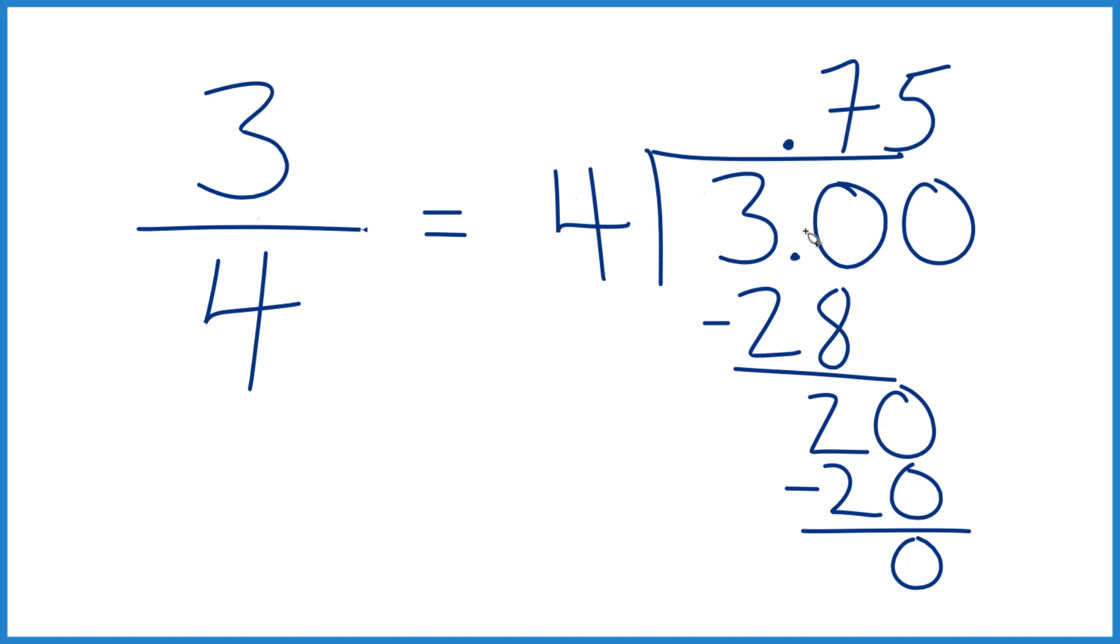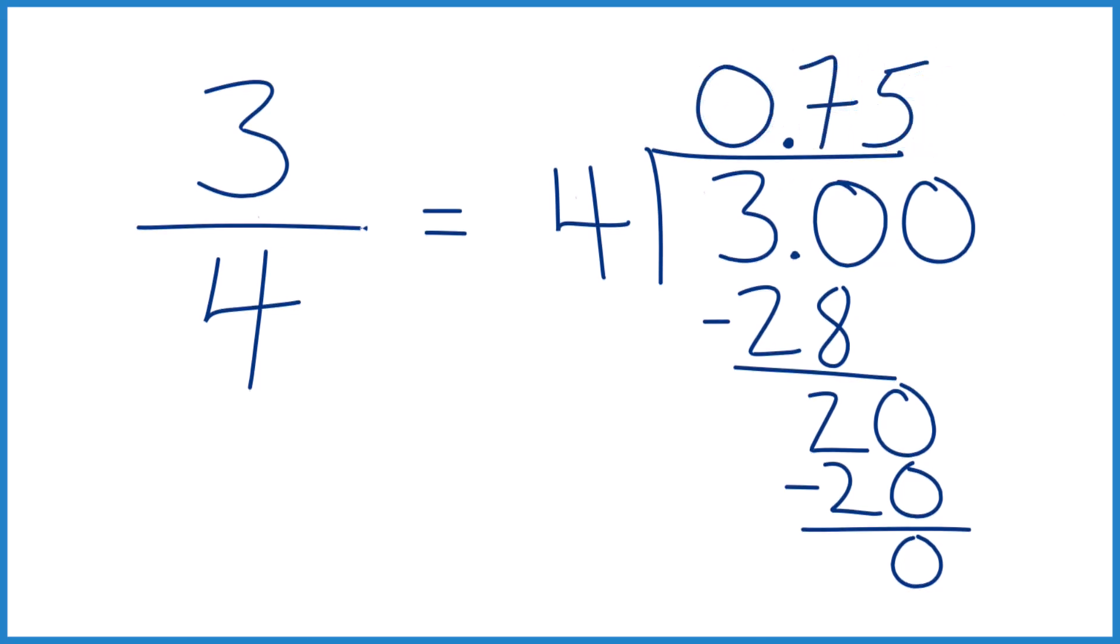4 goes into 3, 0.75 times, and often we'll put a 0 here just to make it clear that we have a decimal. So that's it, that's three-fourths as a decimal. It's Dr. B, and thanks for watching.